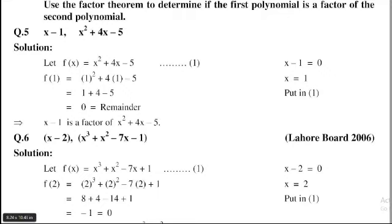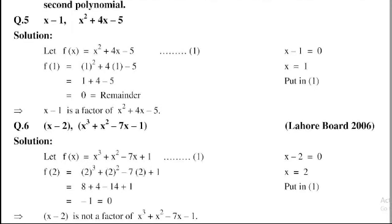So equation 1 becomes f(2) is equal to 2³ plus 2² minus 7 into 2 plus 1. 2³ is equal to 8 plus 2² is equal to 4 minus 7 times 2 is 14 plus 1. 8 plus 4 is equal to 12, 12 plus 1 is 13, 13 minus 14 is equal to minus 1. So does not equal to 0, remainder not equal to 0. Hence x minus 2 is not a factor of x³ plus x² minus 7x minus 1.